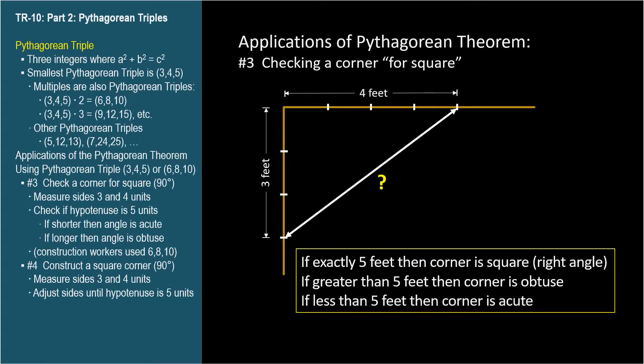If greater than 5 feet, then the corner is obtuse. If less than 5 feet, then the corner is acute. In the next video clip, two carpenters do this as part of their craft.